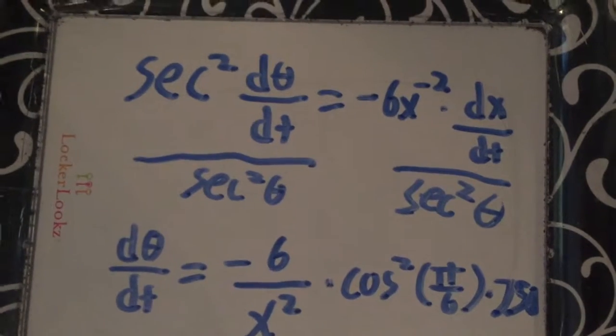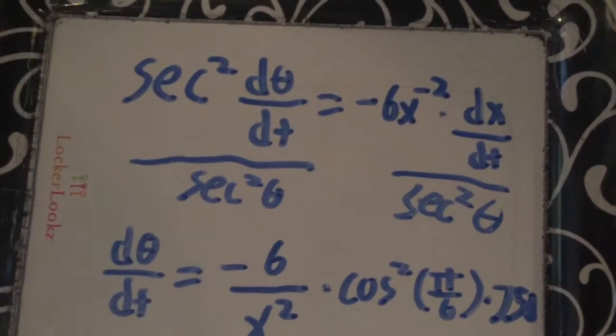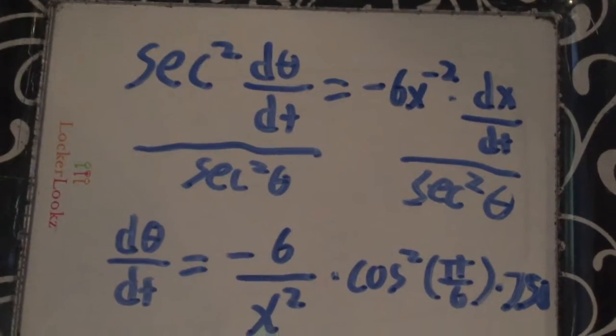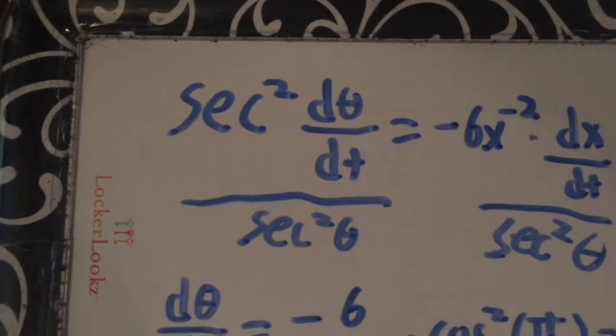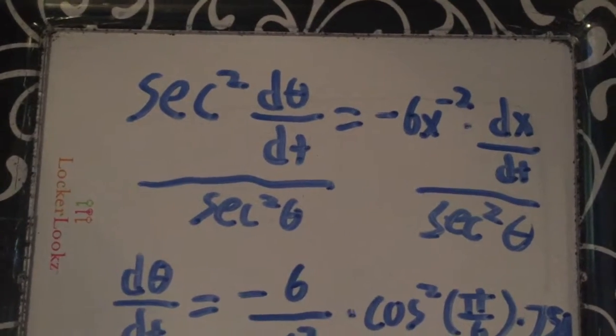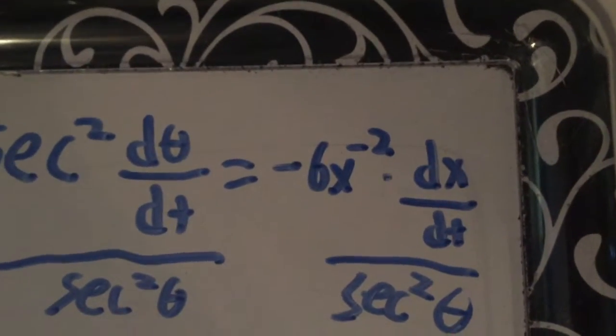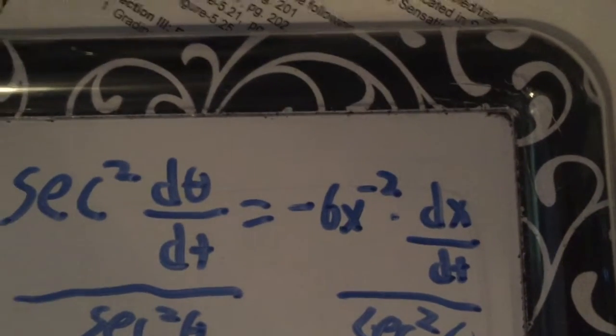Taking the derivative of the equation tan theta equals 6 times x to the negative first power, we get secant squared theta times d theta dt equals negative 6 times x to the negative second power times dx dt.